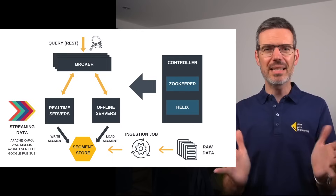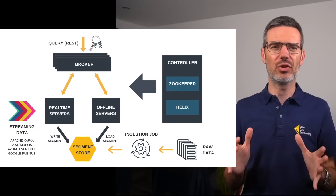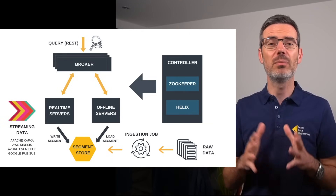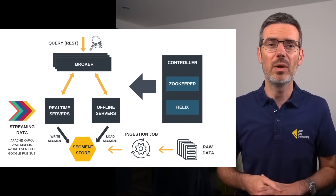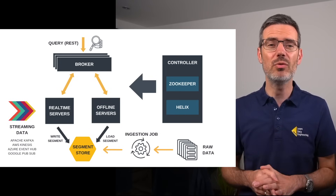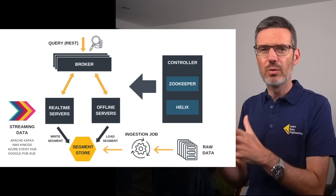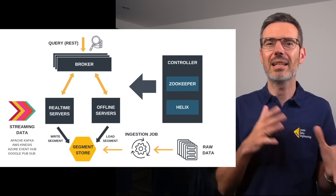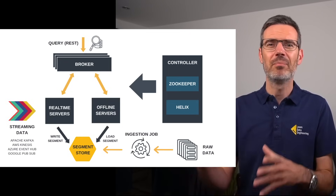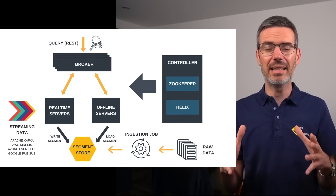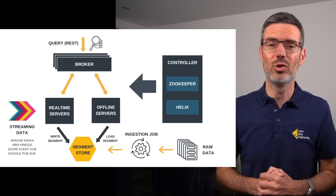Let's jump into how it all works. Let's walk through Pinot's architecture and, more importantly, why it's set up this way. This diagram here gives you the full picture. Pinot is made up of different parts, each with a focused job, and that's what makes it scalable and fast for real-time use cases. Ingestion, querying, background jobs, and cluster coordination are handled by different components, so each part can scale independently and stay responsive under load.